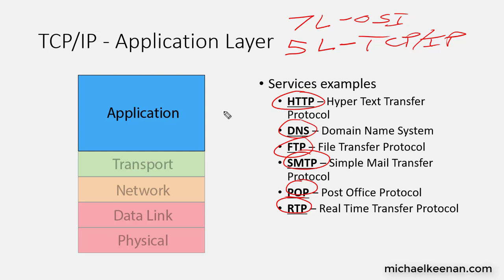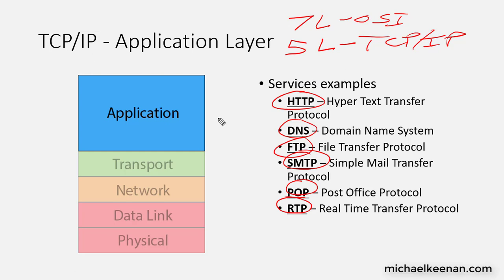And if you remember from a previous video, we talked about same-layer interaction. The same-layer interaction at the application layer would communicate, for example, when a web browser is running on your local computer. The web browser is going to use the HTTP application to pull data from the web server that's running Apache. So HTTP is being used to pull the website data from the server.